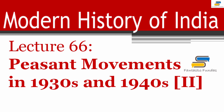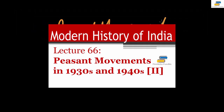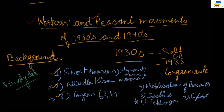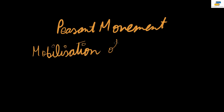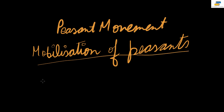Hello everyone, this is Gary from Fantastic Fundas. Today in this lecture we will be finishing the topic of peasant movements in the 1930s and 1940s. I'll quickly show you what we covered last time — the short-term reasons, the All India Kisan Sabha movement, and the role Congress played. If you're not able to understand what we're doing in this lecture, you need to watch the earlier lecture.